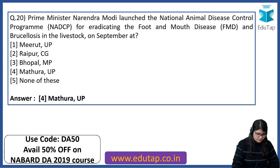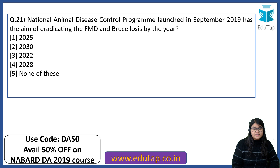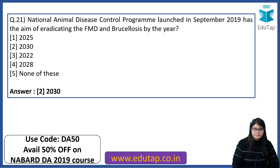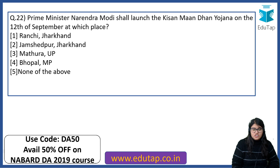The National Animal Disease Control Programme launched in September 2019 aims to eradicate foot and mouth disease and brucellosis by which year? The right answer is by the year 2030. PM Narendra Modi launched the Kisan Mandhan Yojana on 12th September — at which place? The answer is Ranchi, Jharkhand.